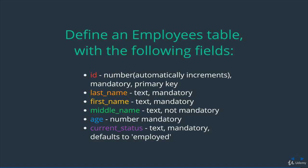Middle name, while it's also text, isn't mandatory because not everyone has a middle name, so we can leave that blank. Then we've got age, which is numeric and it is mandatory — it can't be blank. And finally, current status, which is essentially their employment status. It should be mandatory, so it can't be null. But if no status is provided when a record is inserted, it should default to 'employed'. We'll have two statuses: employed and terminated.